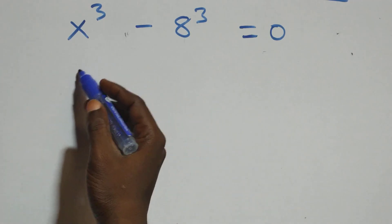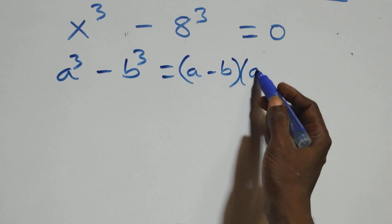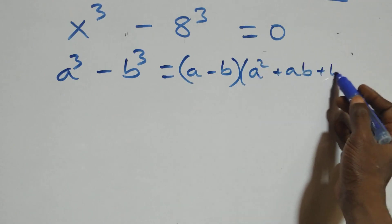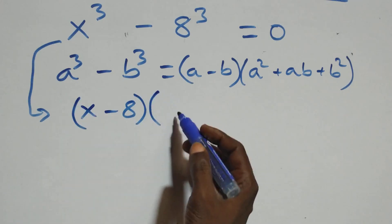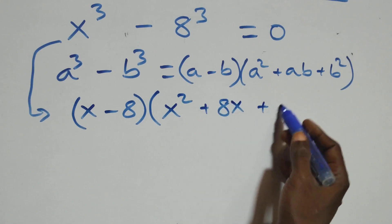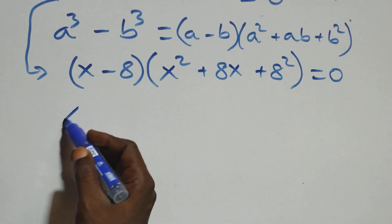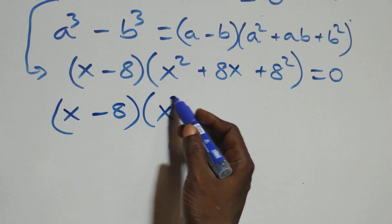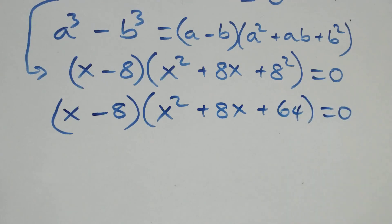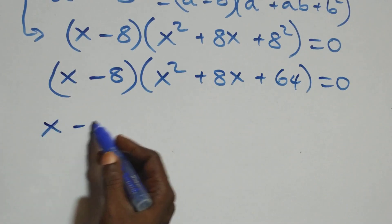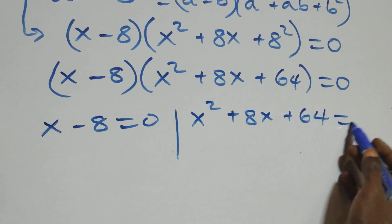Solving the second case, we use the identity a³ minus b³ = (a − b)(a² + ab + b²). What we have becomes (x − 8)(x² + 8x + 64) equals to 0. This gives two sub-cases: x minus 8 equals to 0, or x² + 8x + 64 equals to 0.